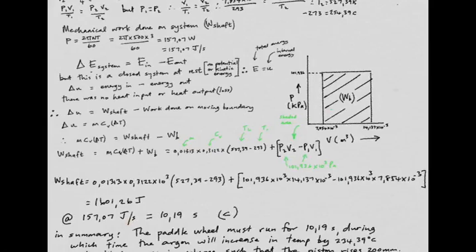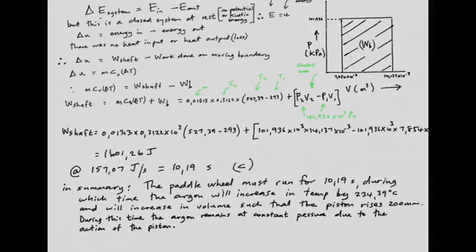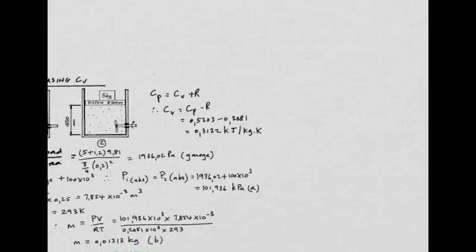In summary: the paddle wheel must run for 10.19 seconds, during which the argon increases in temperature by 234.39°C and increases in volume such that the piston rises 200 mm. During this time the argon remains at constant pressure. Note: cv was obtained by taking cp and subtracting R.